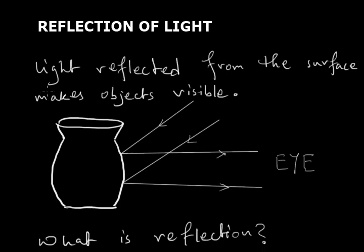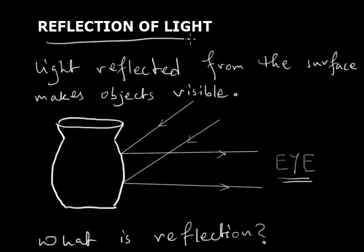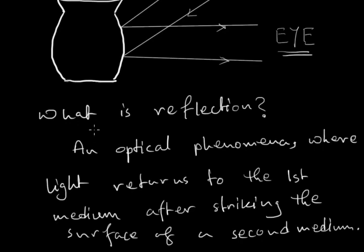Our visibility is due to light. If there is a source somewhere at a distance and light is coming from it, it falls on the surface of the object and gets reflected. Those reflected rays fall on our eyes, creating a sense of vision. Reflection of light is the phenomenon where light returns to the first medium after striking the surface of the second medium.